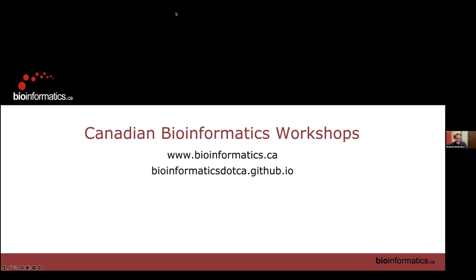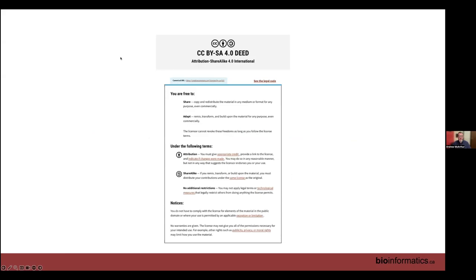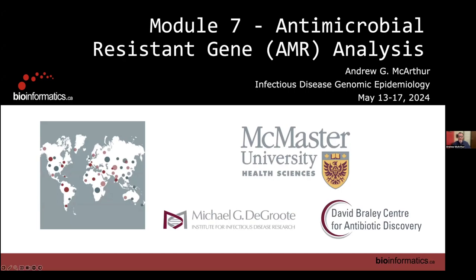Welcome back after this morning's session. I'm going to start a section on a much more specific question: after you've worked out the relationships of your pathogens and assessed the confidence of your assembly and sequencing, we're going to talk about how to annotate one particular set of features — antimicrobial resistance genes. I'm Andrew McArthur, a professor at McMaster University.